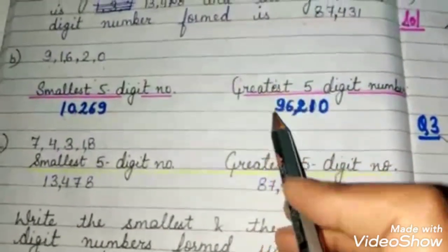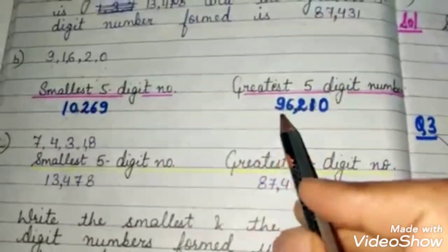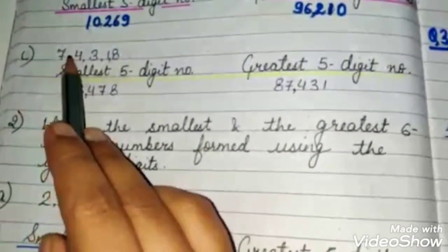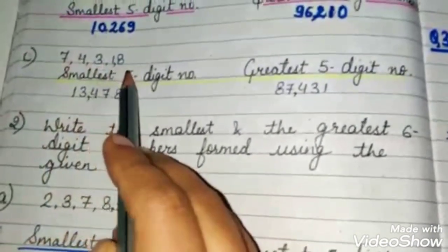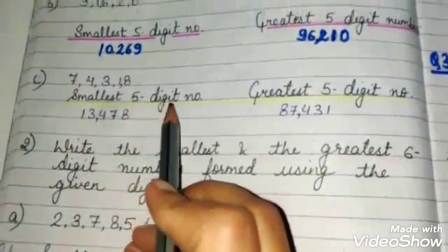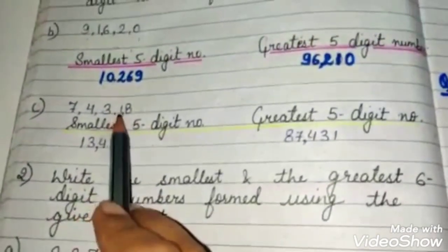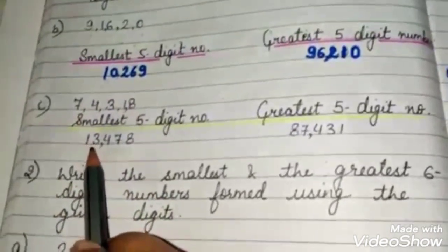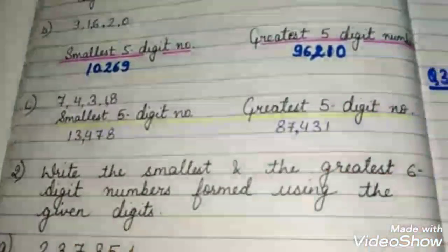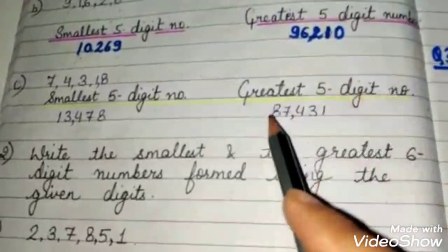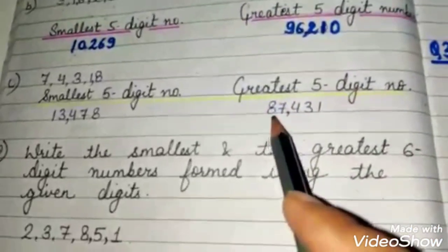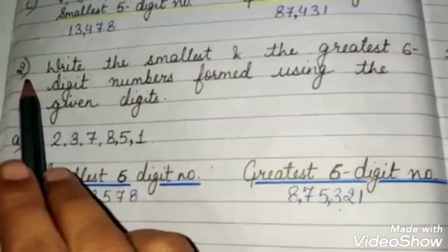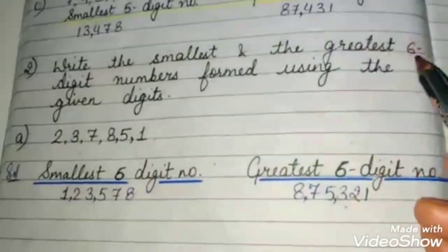So the smallest 5-digit number for digits 9, 4, 3, 1, 8 is 1, 3, 4, 7, 8 — that is 13,478. The greatest 5-digit number is 87,431. Then question number 2: write the smallest and greatest 6-digit number formed using the given digits.